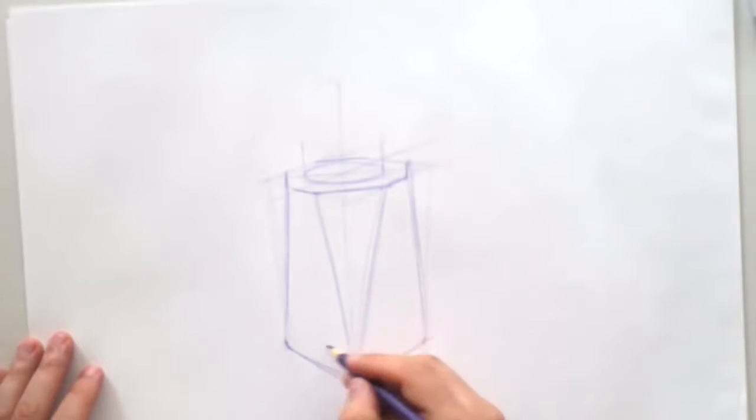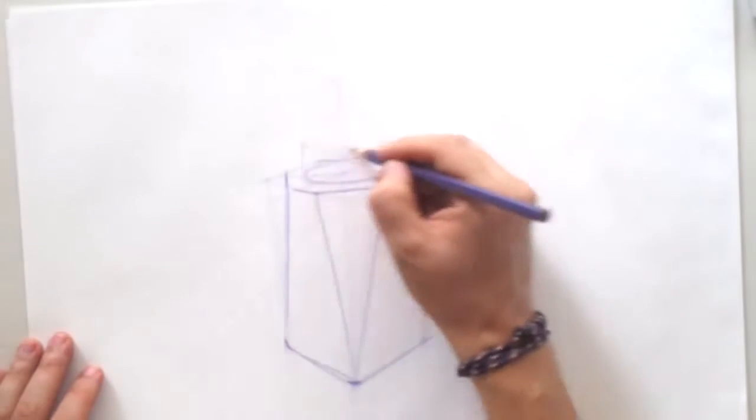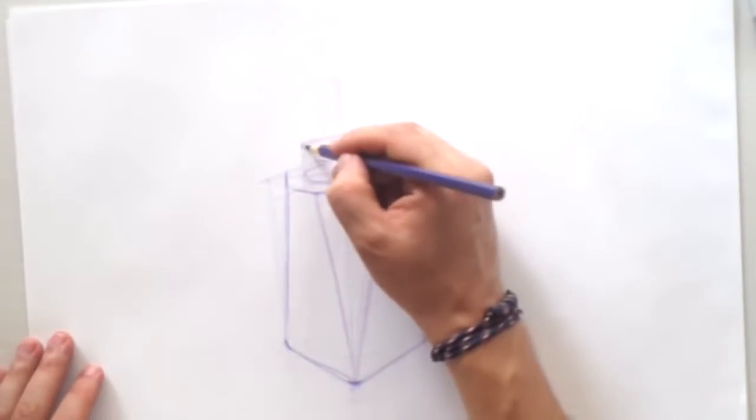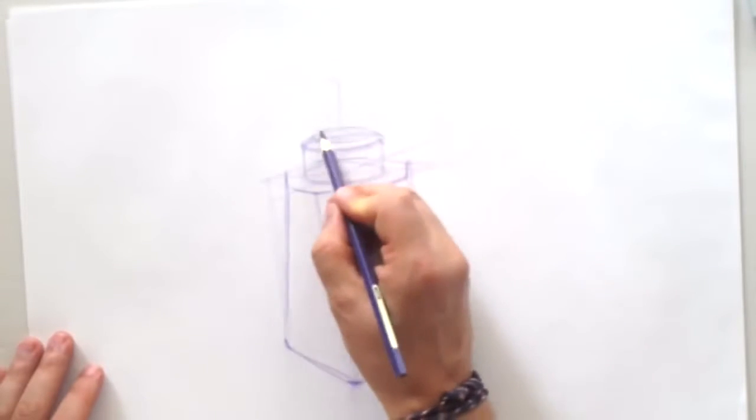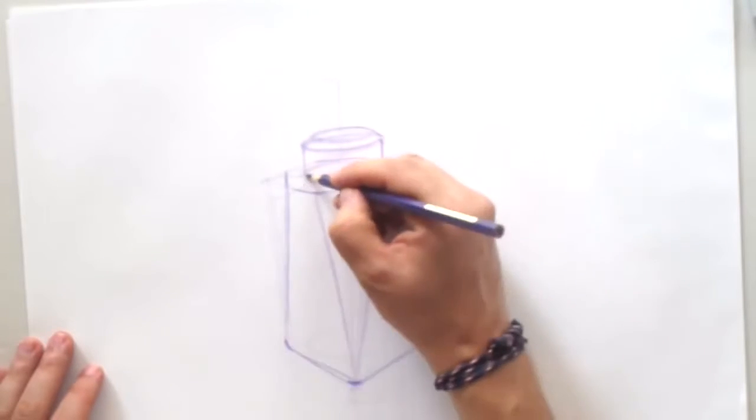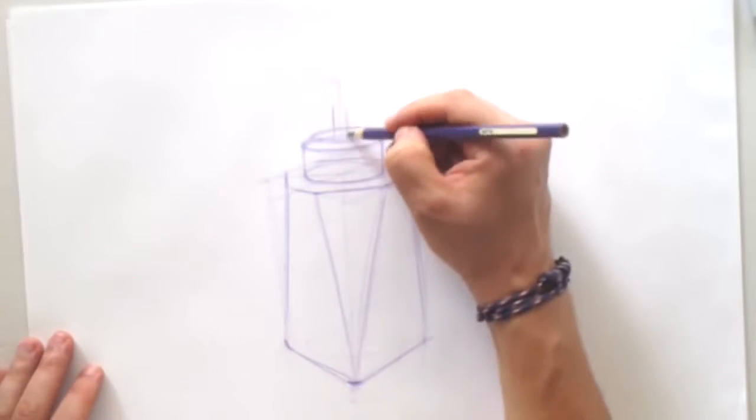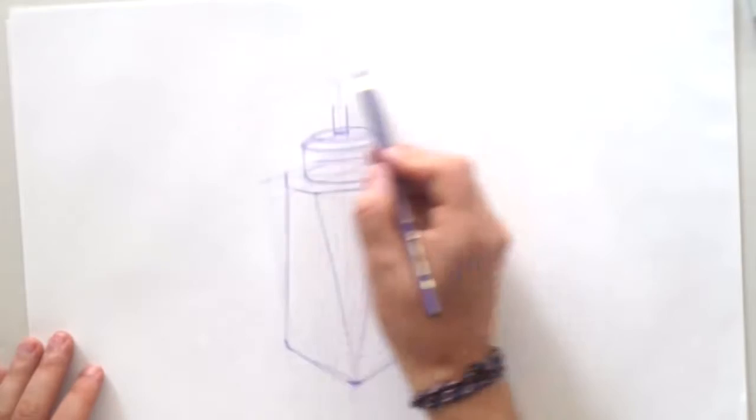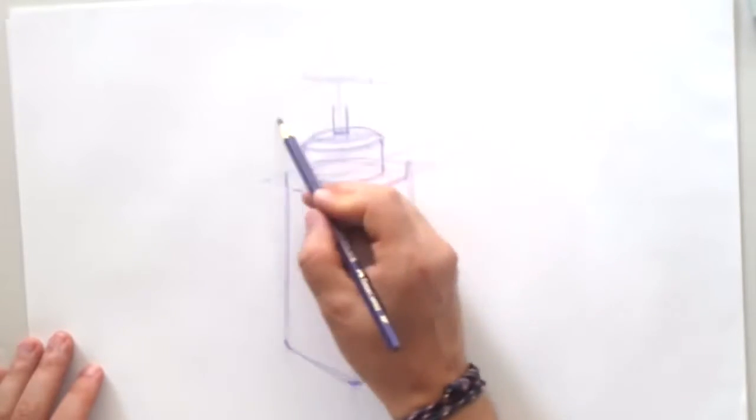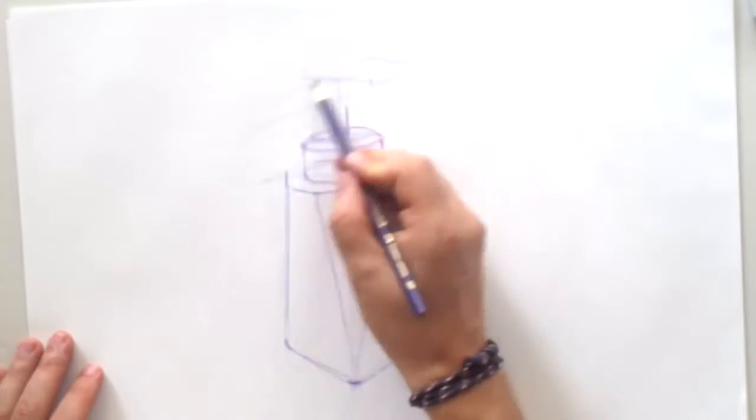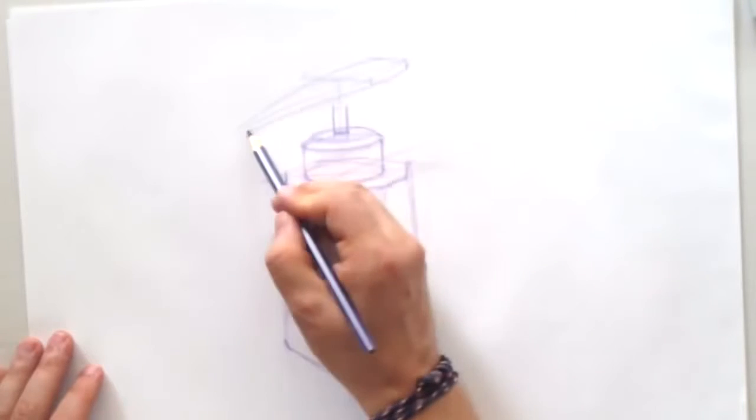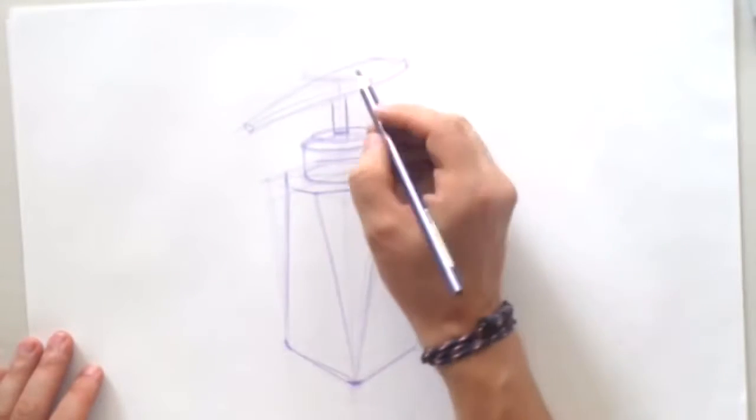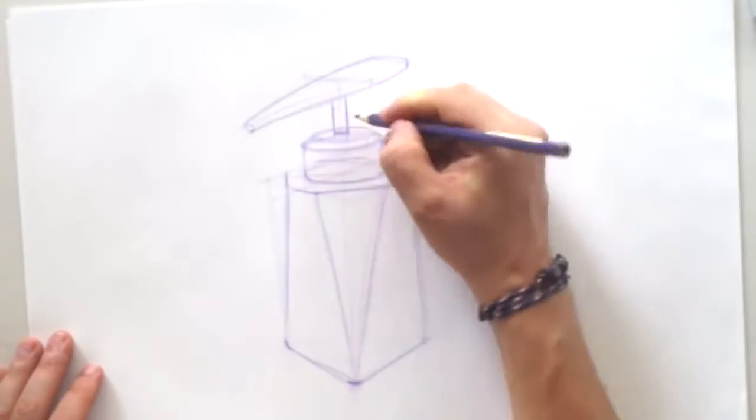So as you can see I'm using two point perspective to create the base and I'm using ellipses to create this cylinder on top and one more detail on top of it actually, that part that you press.